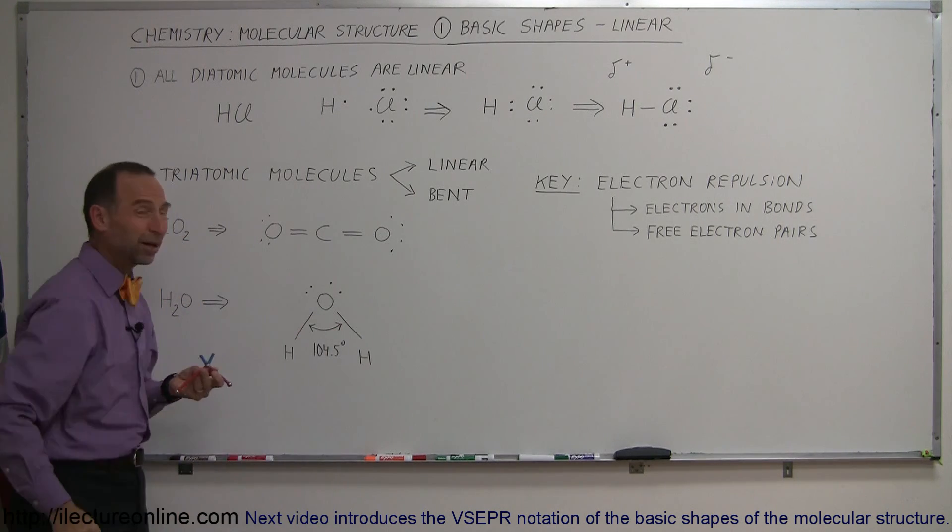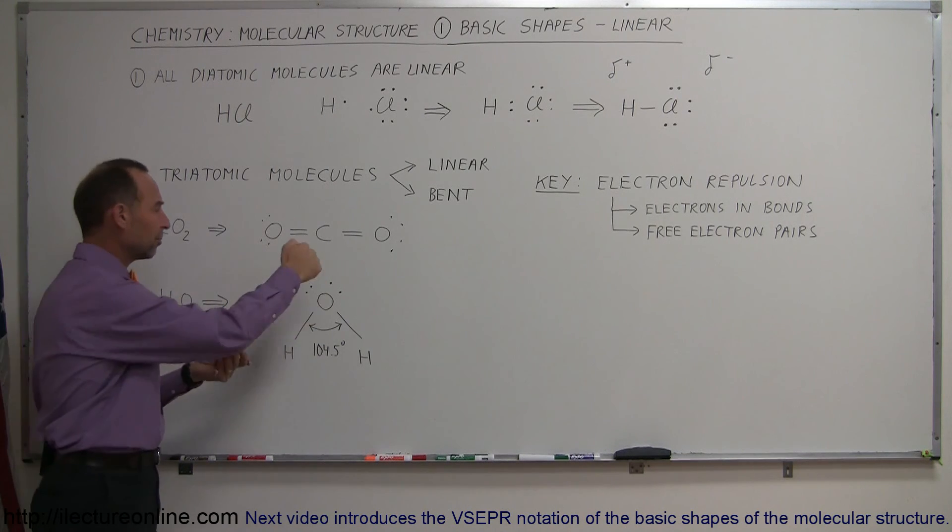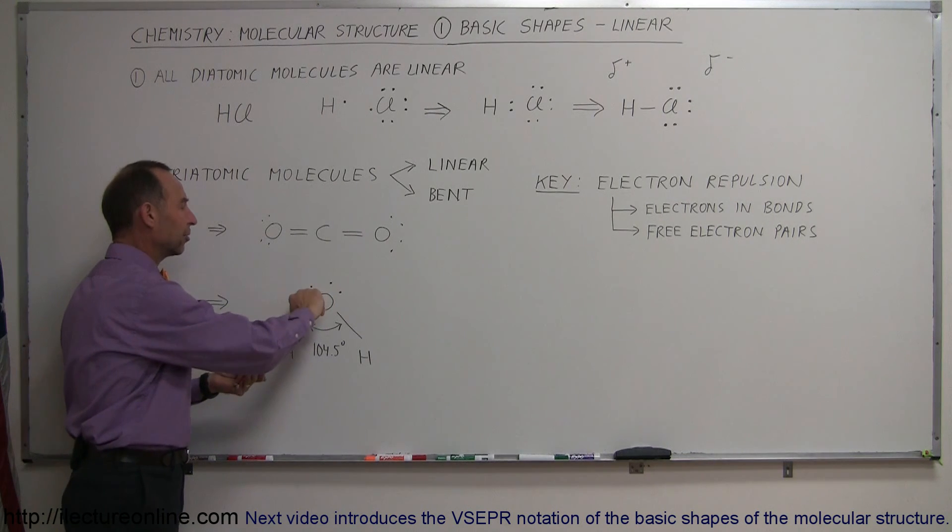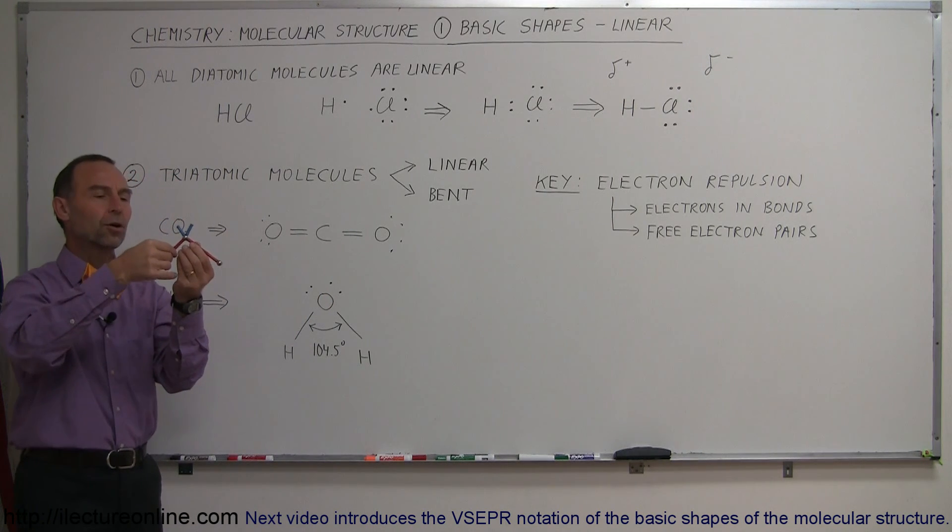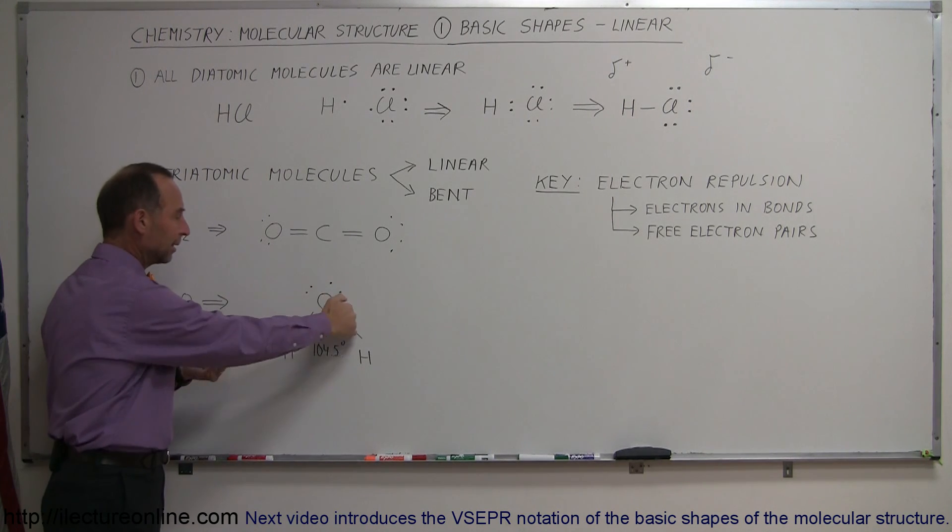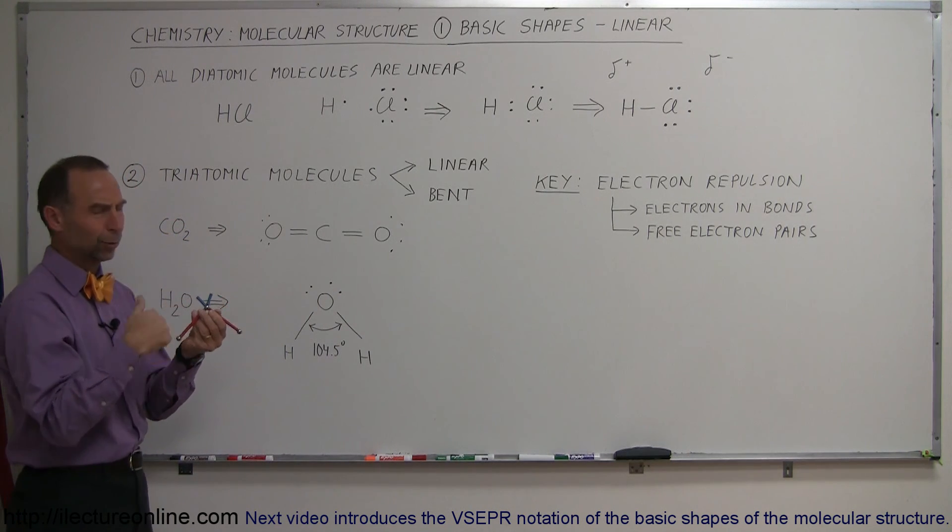The angle between the two hydrogens is about 104.5 degrees. The reason for that is the central atom has these free electrons that repel each other and have no place to go but to push away the electrons using the bonding, causing this particular shape.